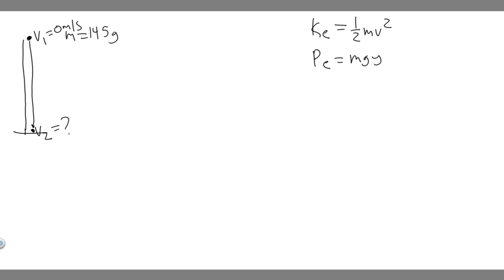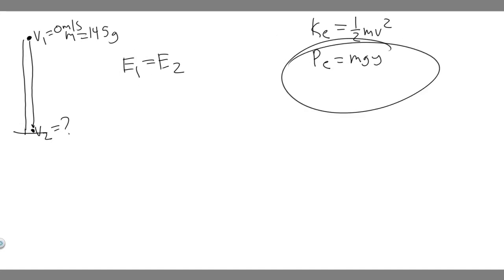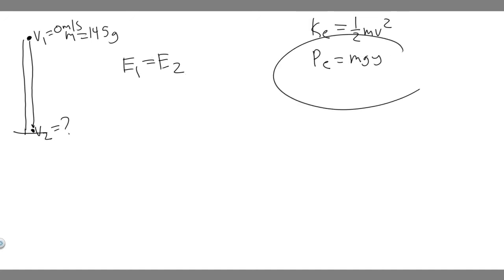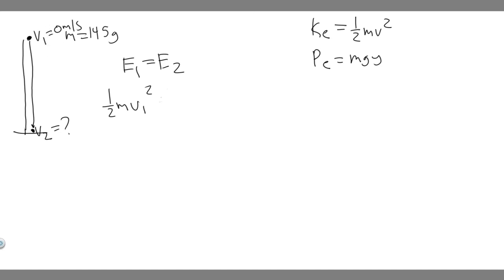The way we solve this problem is by saying the energy in the beginning — E sub 1 — has to equal the energy at the end. E sub 1 is the kinetic energy at the beginning plus the potential energy at the beginning, and E sub 2 is the kinetic energy at the end plus the potential energy at the end. So: ½mv₁² + mgy₁ = ½mv₂² + mgy₂.